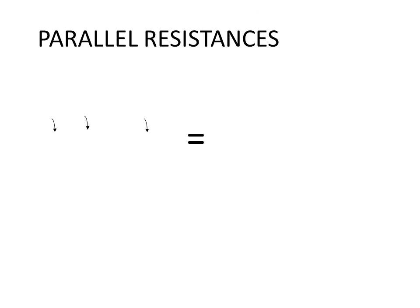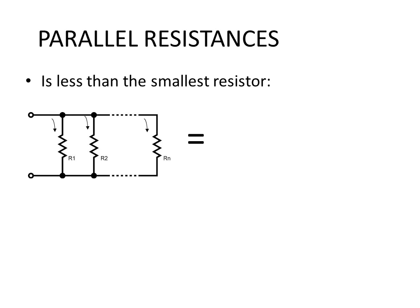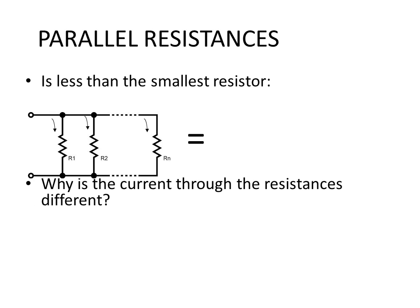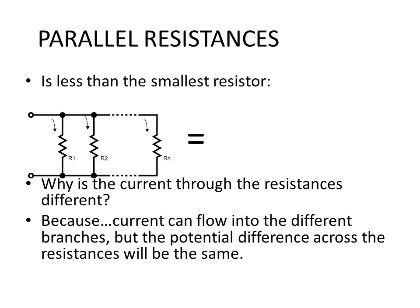Connecting resistances in parallel: Their value together will always be less than the smallest resistor. Consider the following diagram. Why is the current through the resistors different? Because current can flow into the different branches, but the potential difference across the resistances will be the same. Therefore I will be the potential difference V over that specific resistance, or R will be the potential difference V divided by I.